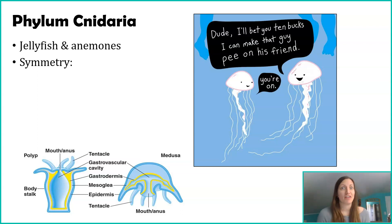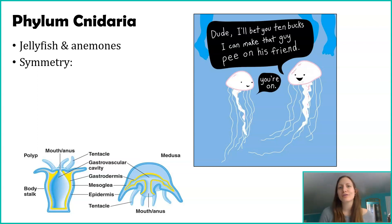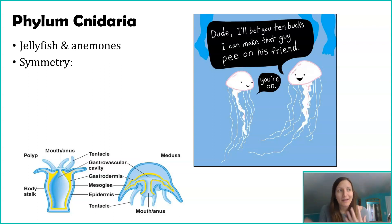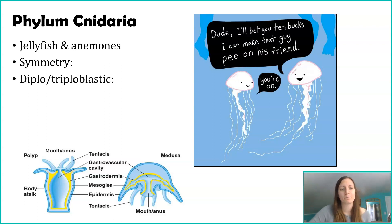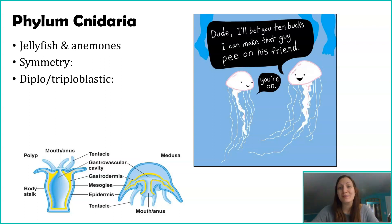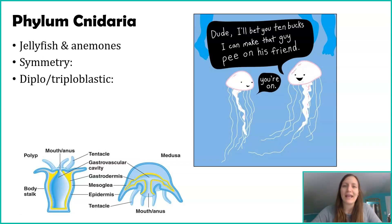Most jellyfish have many, many different lines of symmetry. When you're radially symmetrical, you experience your environment equally from all sides, but although that is a nice advantage, you move slower because it requires a lot more coordination to move in any particular direction. These organisms are the only ones we're going to talk about that are diploblastic.